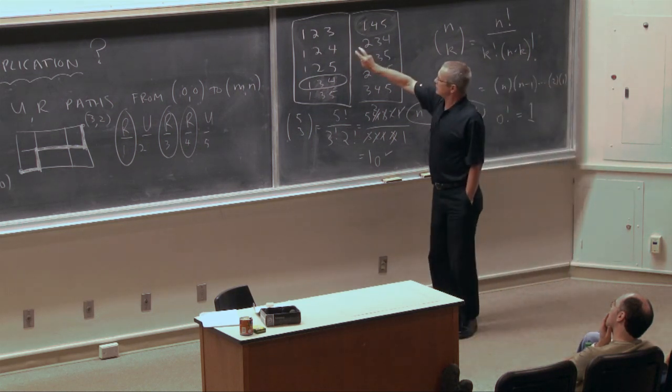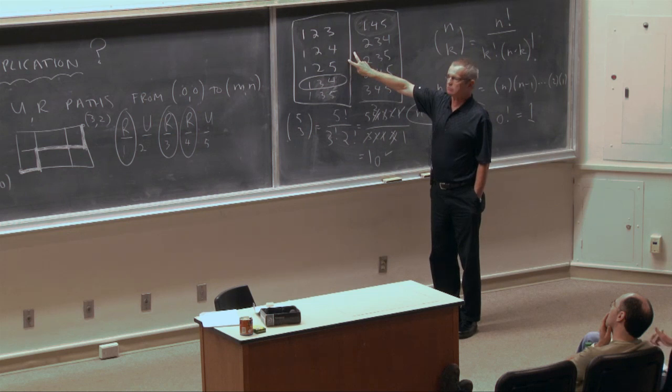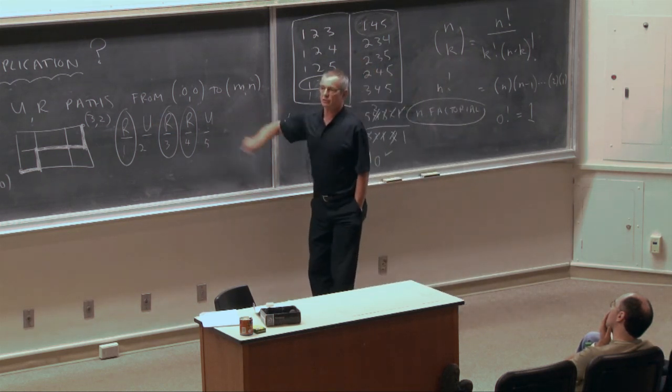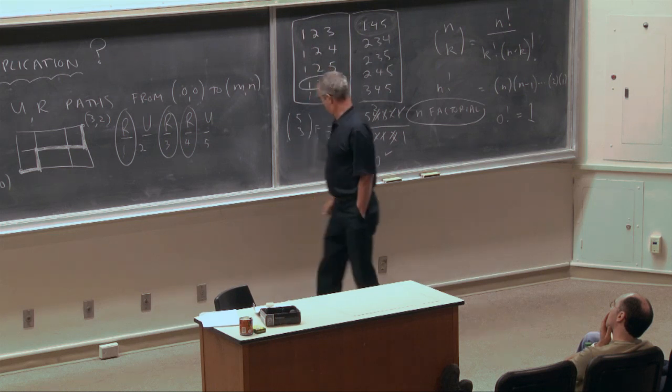There's a one-to-one correspondence between elements of this bucket of the three subsets of a 5 set and the paths that are three rights and two u's.